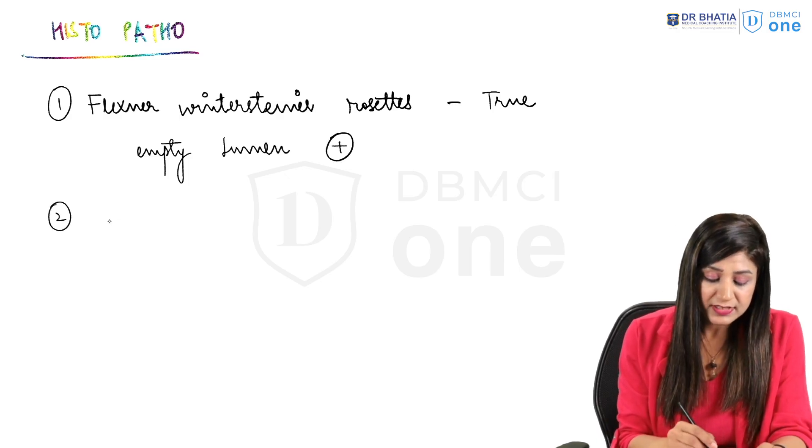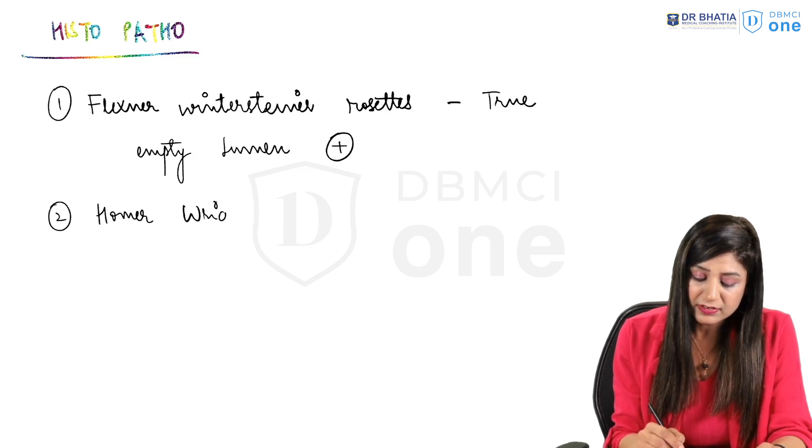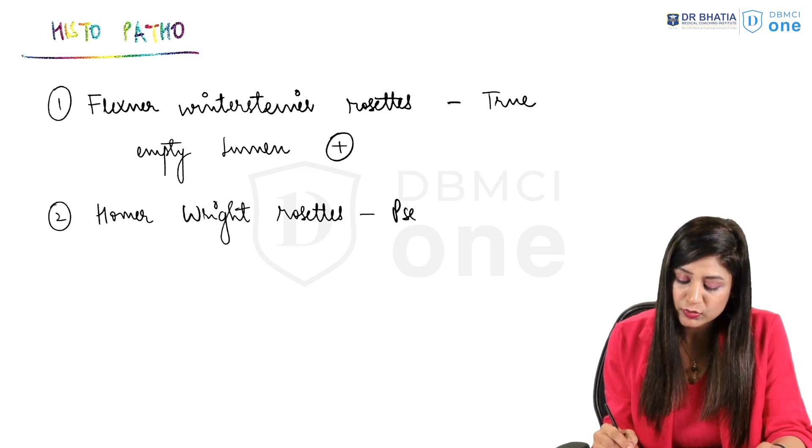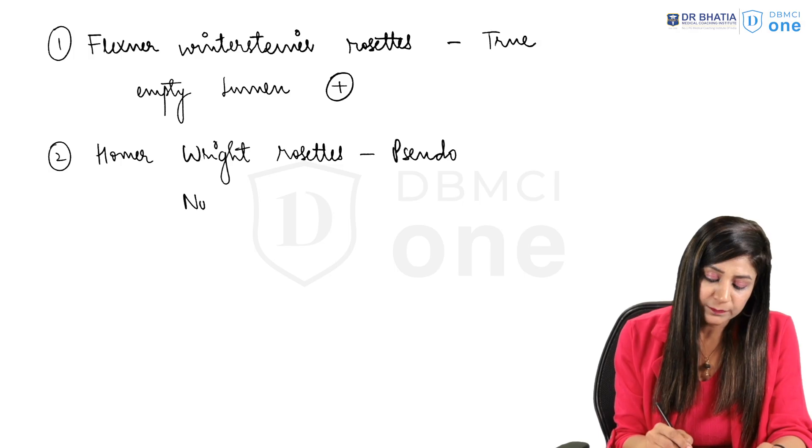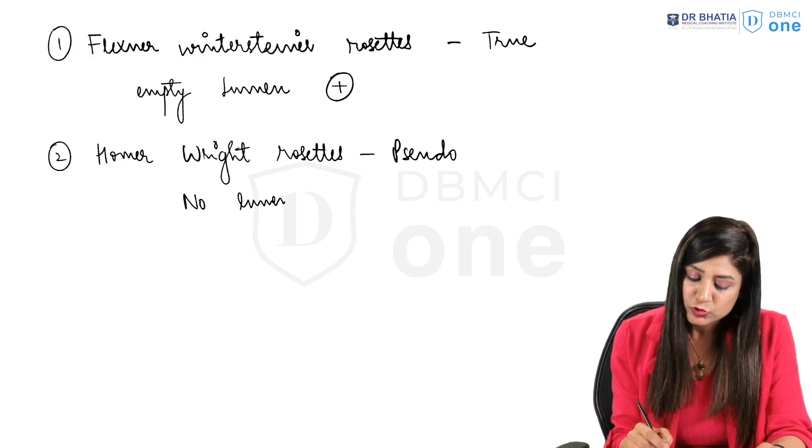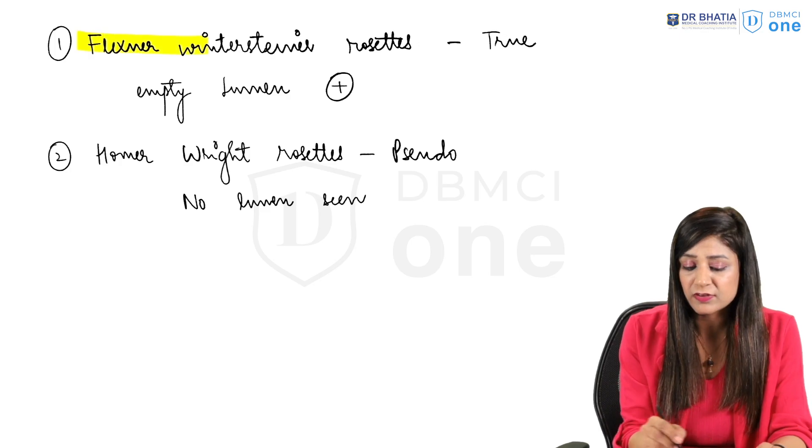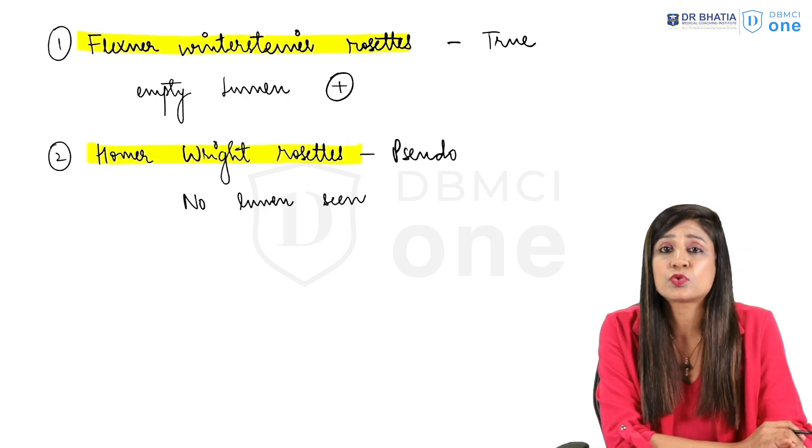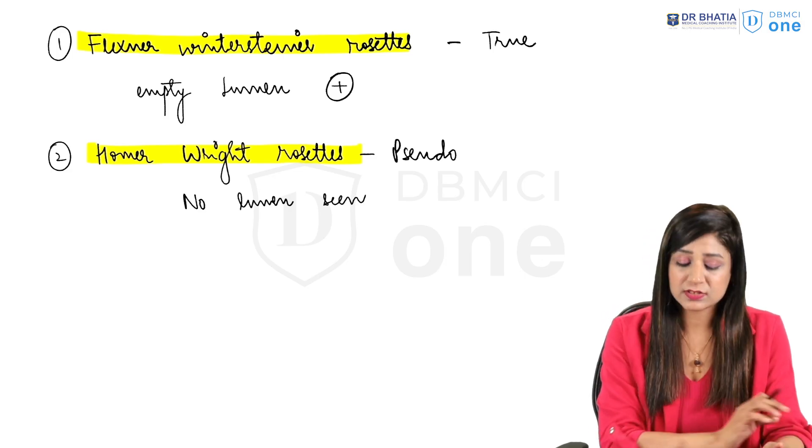While the other rosettes are the Homer-Wright rosettes. These are actually the pseudo rosettes and there will be no lumen seen. So very easily you can differentiate it microscopically. One will be the Flexner-Wintersteiner rosette, one is the Homer-Wright rosette, one are the true rosettes, one are the pseudo rosettes. In one you can see the empty lumen and another you will not see.